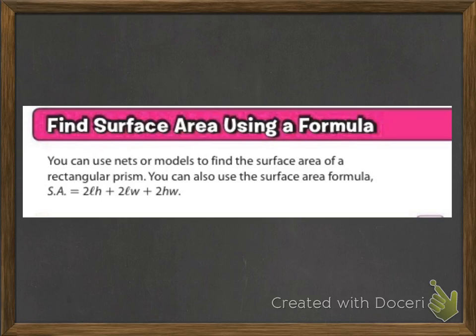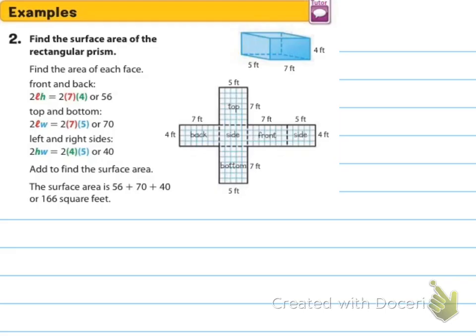So finding the surface area using a formula — if you know your length, width, and height, then you've got all the different dimensions you're going to need to find the area of that figure. So example number two says find the surface area of the rectangular prism, and this time they're just giving you length, width, and height.